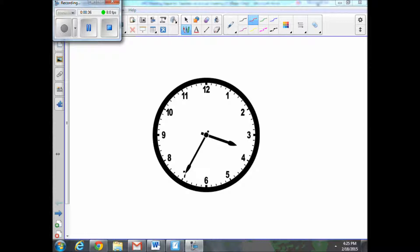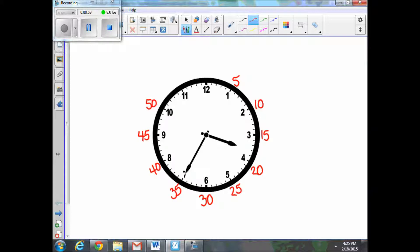They know to start with number one, and at number one they would put a five because it's five minutes. At two, ten. Three, we're going to put fifteen and keep going: twenty, twenty-five, thirty, thirty-five, forty, forty-five, fifty, fifty-five, sixty. We're also going to put the zero because it also indicates that time is beginning.